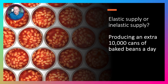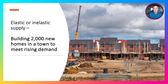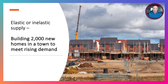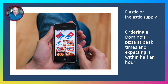Consider some examples. What's the elasticity of supply of producing an extra 10,000 cans of baked beans a day? In theory it should be fairly easy, but it does depend on the amount of spare capacity in baked bean manufacturing factories. Building 2,000 new homes to meet rising demand — we think supply will be inelastic, given the time frame involved in getting planning permission, acquiring land, potential shortages of skilled labour, and shortages of key materials. What about ordering a Domino's at peak times? At peak times, demand is high and local Domino's franchises may come up against supply constraints, making delivery fairly inelastic — hence the delays.